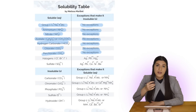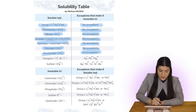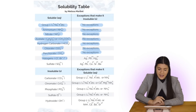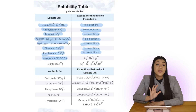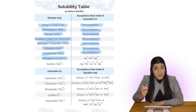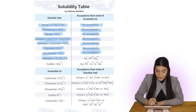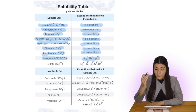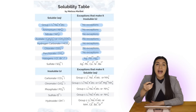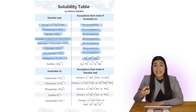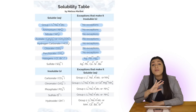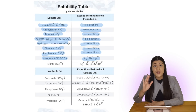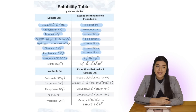When we move on to something that's a halogen — so chlorine, bromine, or iodine — it's typically soluble with the exception of three metals: silver, lead, or mercury. Whenever we see silver, lead, or mercury attached to a halogen, that makes it insoluble, meaning it's a solid. But if those metals were not attached to a halogen, then it would be aqueous and soluble.